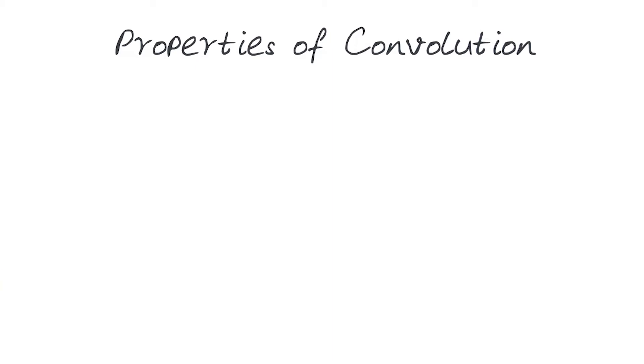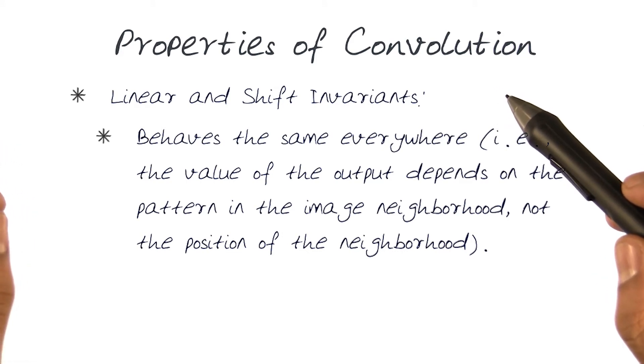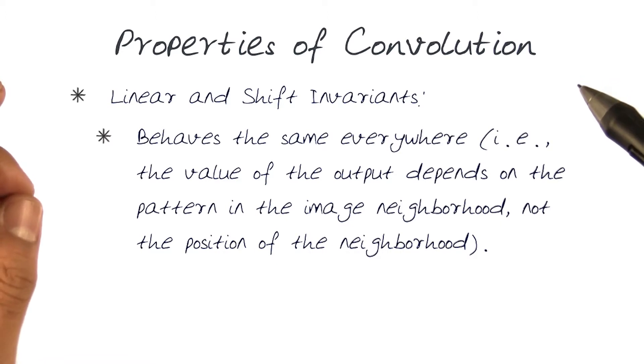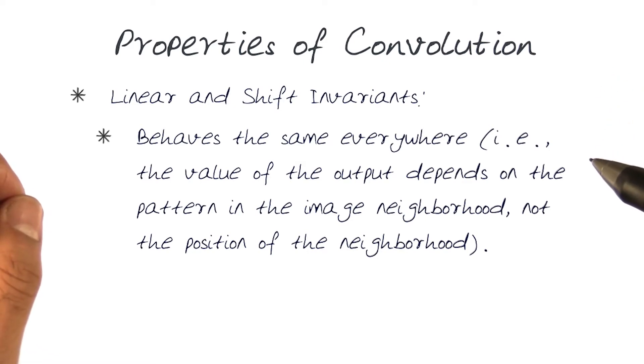Let's look at a few properties of the convolution method. One property is that a convolution output, the process of convoluting an image, is linear and shift invariant. What that primarily means is that it's the same everywhere. The value of the output depends on the pattern in the image neighborhood, not the position of the neighborhood. So it doesn't matter how we apply it, it always will come up with the same answer. It doesn't matter how much you shift the image.